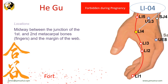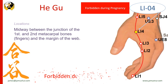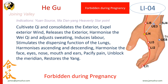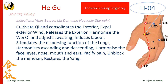Hegu is located midway between the junction of the first and second metacarpal bones and the margin of the web. Hegu was also included by Ma Dan-yang in his heavenly star points. Gao Wu, the Ming dynasty author, recognized its supreme importance and included it among his four command points. It is still probably the best known and most commonly used of all acupoints. Hegu is a primary point to expel wind cold and wind heat and to release the exterior, making it an excellent point to expel pathogens and nourish immunity.